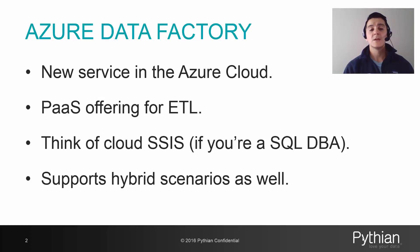It also supports hybrid setups — hybrid pipelines where you're moving data from on-premises to the cloud by means of a gateway. You install a gateway agent on a machine that can see your Oracle or SQL Server on-premises servers, and that machine acts as a middleman between your on-premises machines and the cloud.